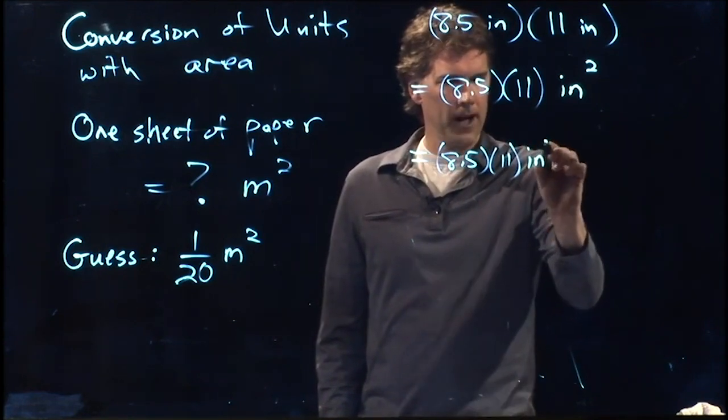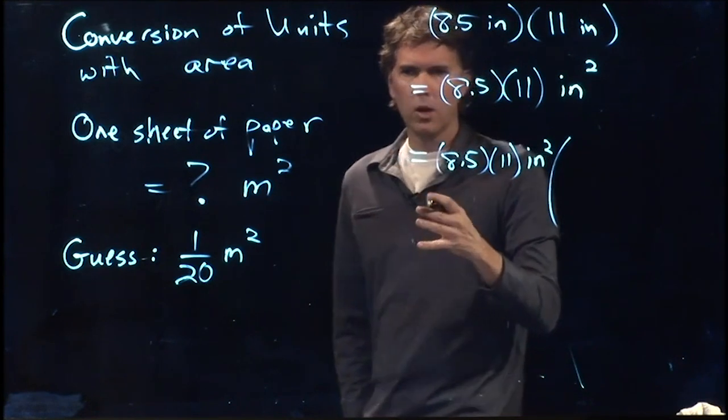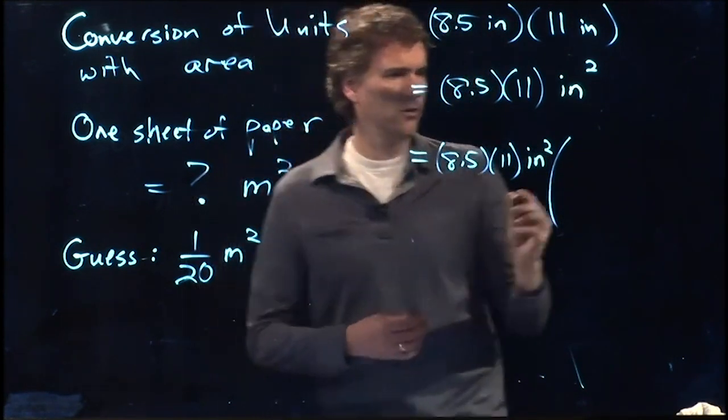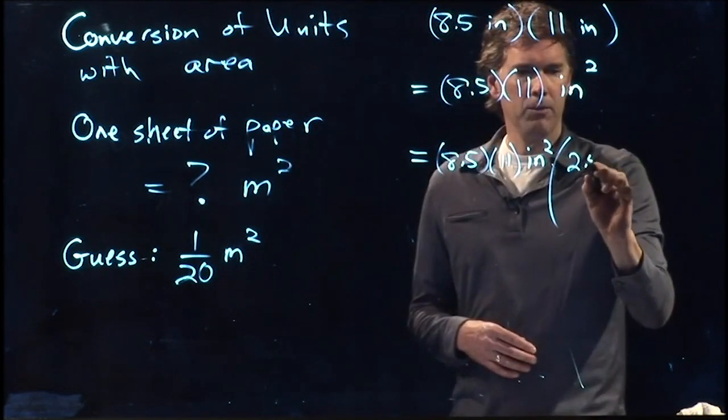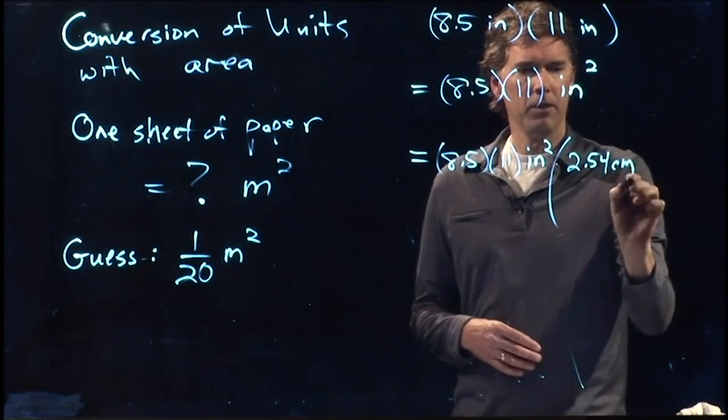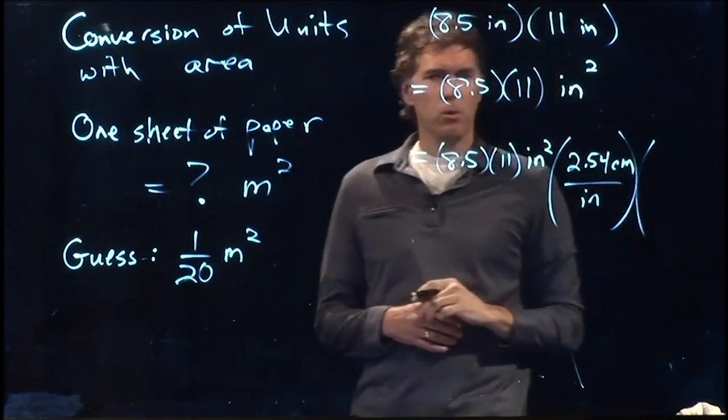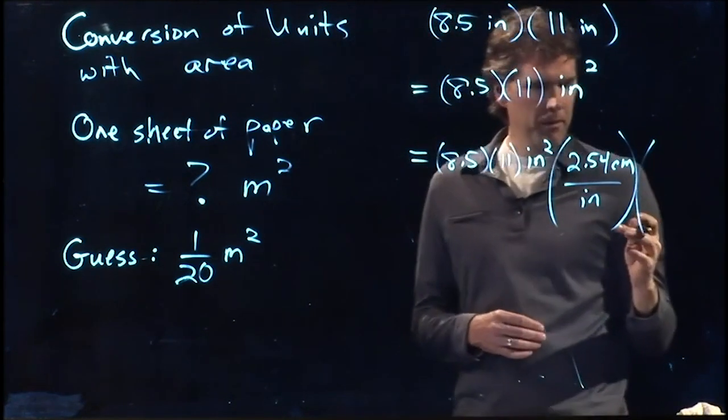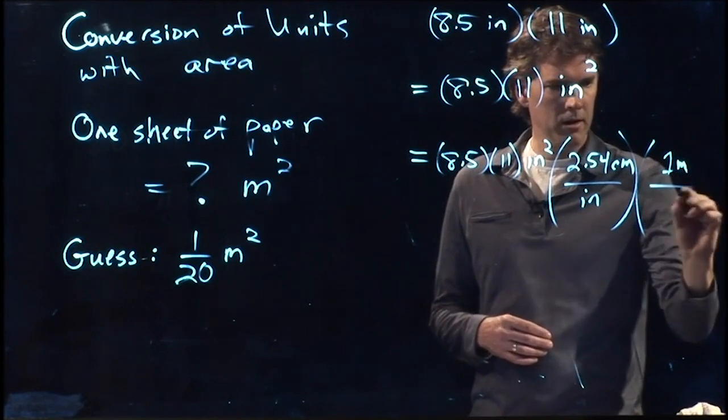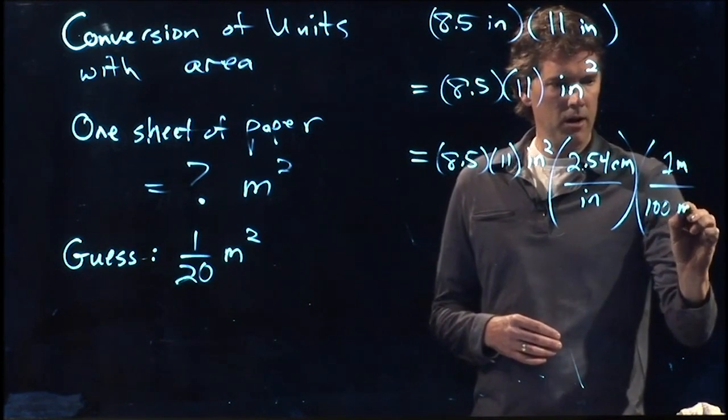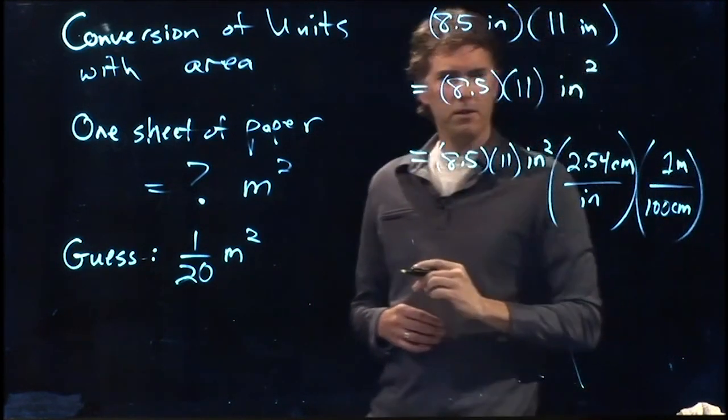So how do we convert it? Well, we just talked about going from centimeters to inches. Let's do that again. 2.54 centimeters per inch. And now we want to get to meters. And we remember that in one meter, there are 100 centimeters.